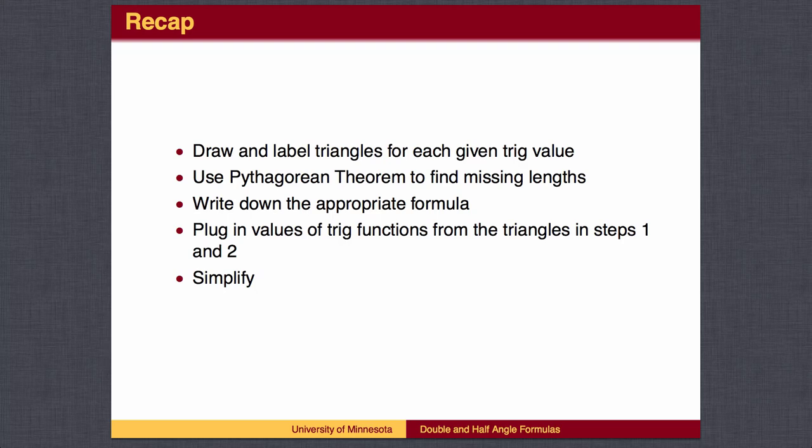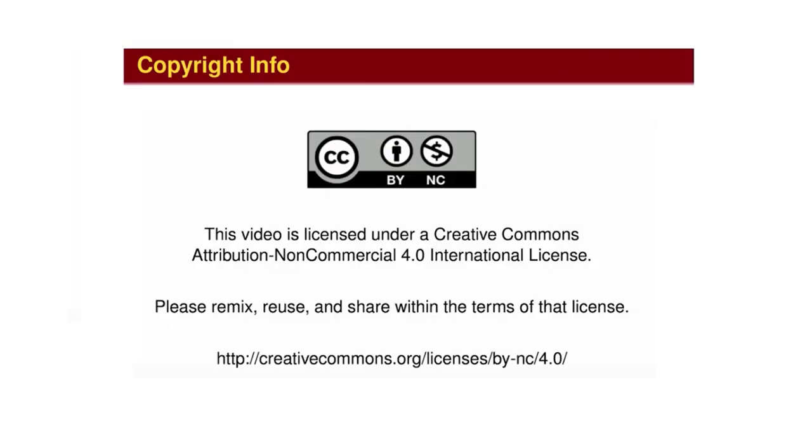To recap, in most cases you will be given the value of a single trig function and be asked to find the value of a trig function for the double or half angle. To do so, draw and label a triangle for the original angle. Find missing lengths by the Pythagorean theorem. Then use the appropriate formula, plug in the values by reading them off the triangles, and simplify.